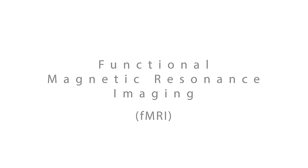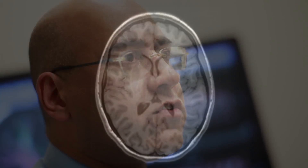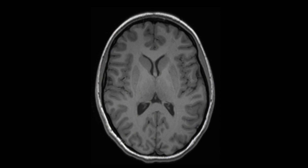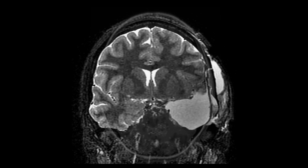Many people are familiar with MRI, Magnetic Resonance Imaging. It uses very strong magnets, no radiation. An MRI is just looking at the structure — it is telling you the anatomy, the anatomy of the brain.